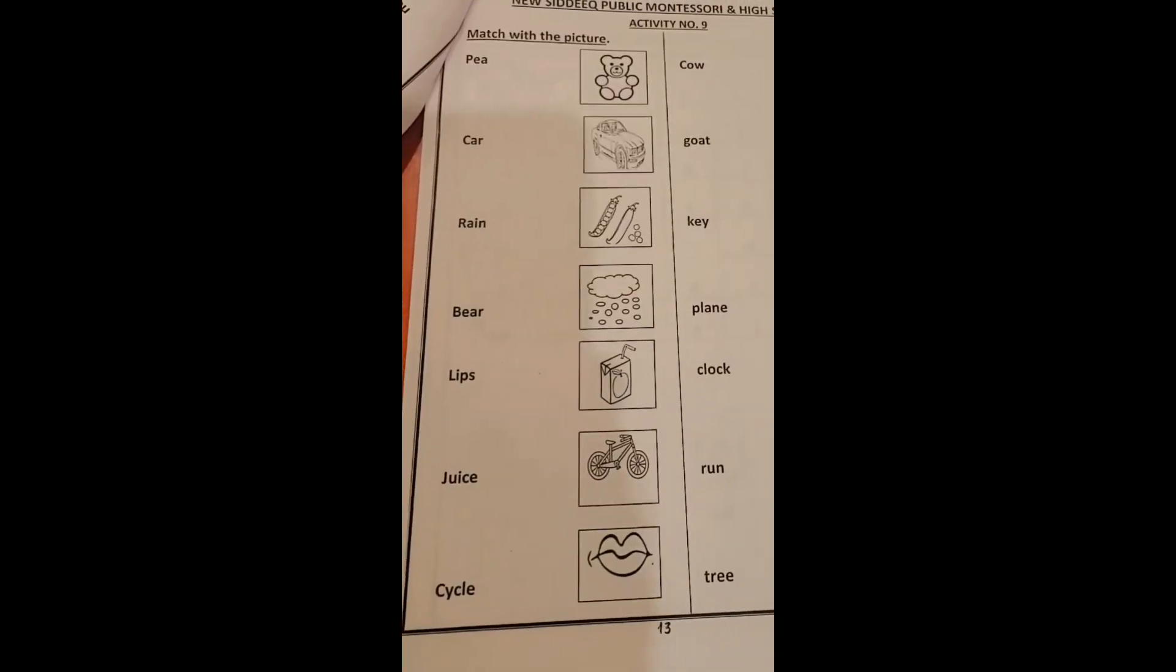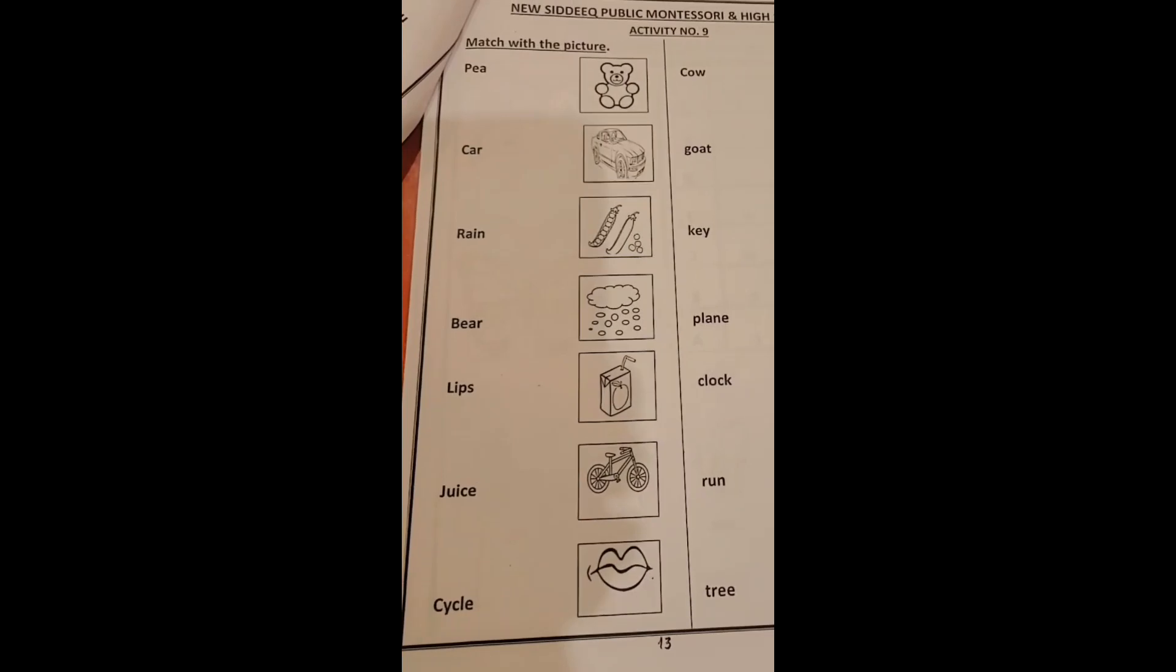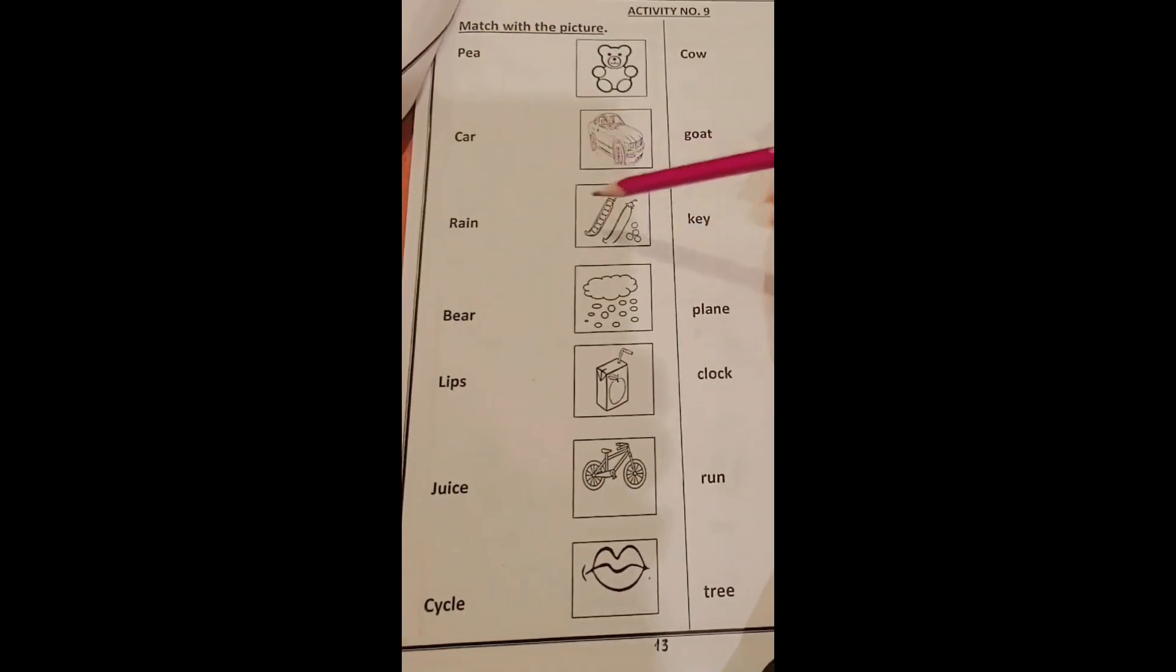Students, our activity number 9 is matching with pictures. Let's see. The first word is peace. Where is peace? Here it is.